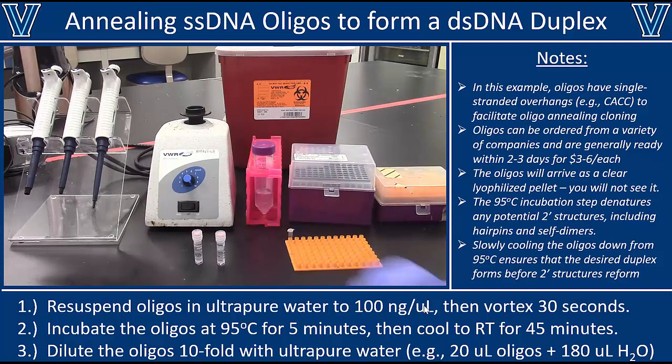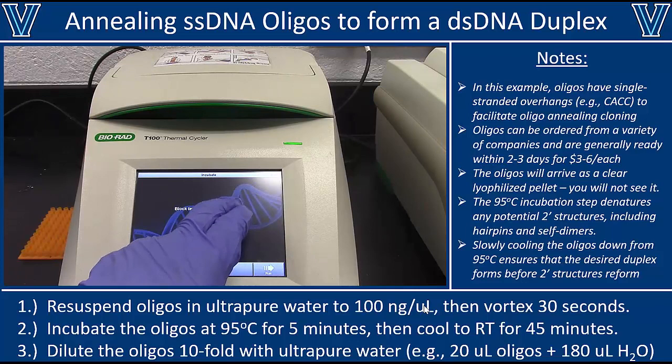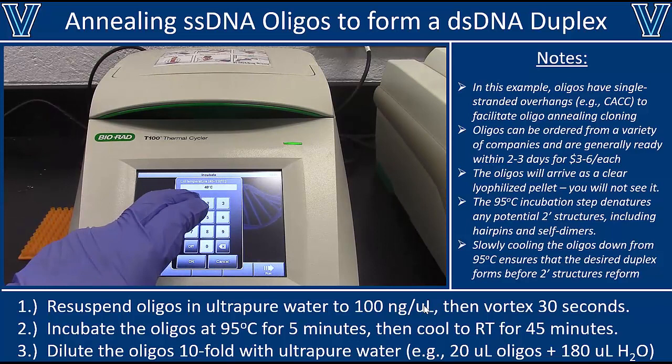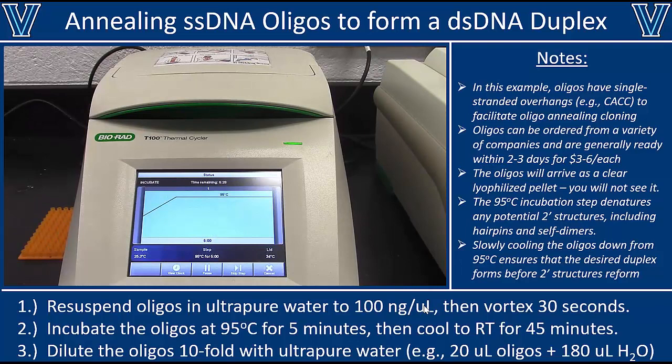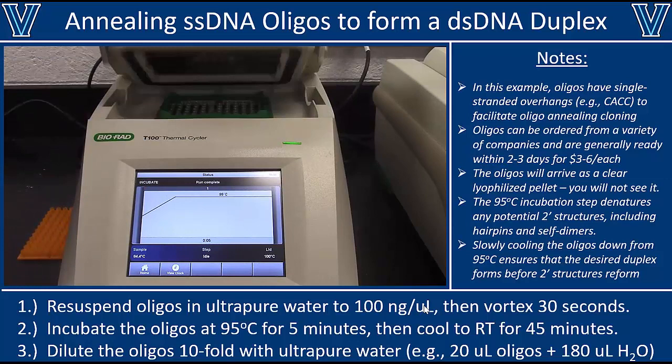With our sample prepared, we take it over to the thermal cycler and place it as close to the middle of the block as possible — that's where you get the most consistent temperatures. Set the block temperature to 95 degrees Celsius with a hold time of 5 minutes. Be careful: make sure you put in 500 for 5 minutes. The lid temperature should be 100 degrees Celsius — the lid temperature has to be as hot or hotter than the block to prevent any evaporated solution from condensing on the lid.